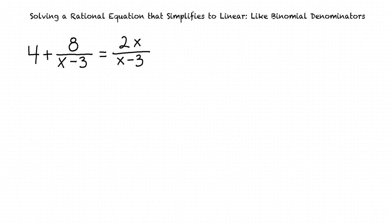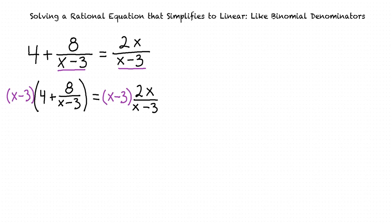The rational expressions in this equation all share a common denominator, x minus 3. Because the denominators are the same, we can rewrite the equation without any rational expressions by multiplying both sides of this equation by that common denominator.